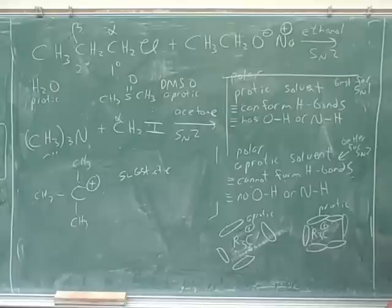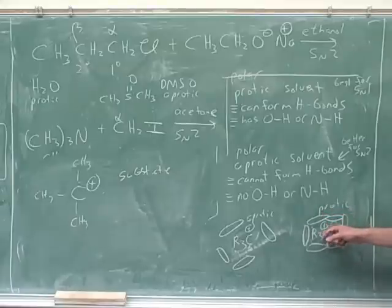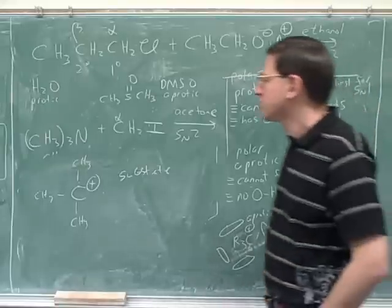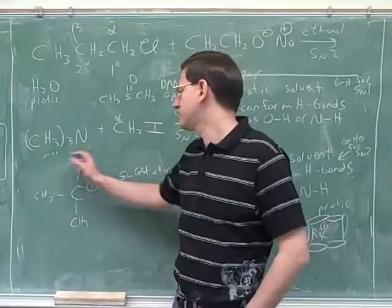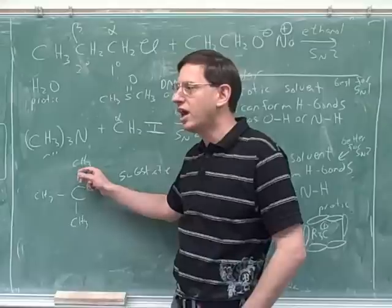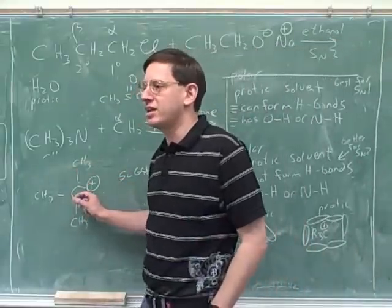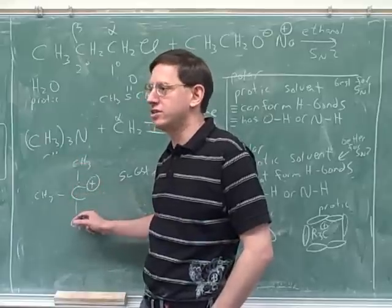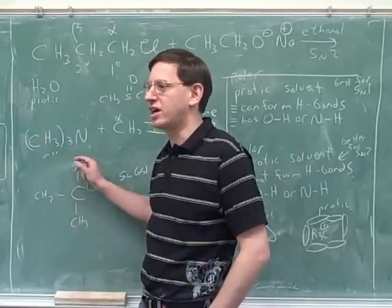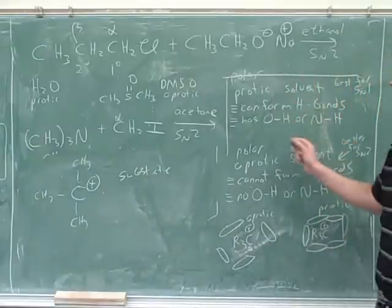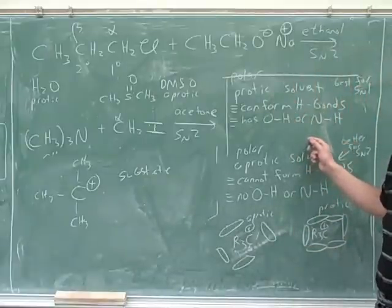If you memorize that the big obstacle to SN1 is stabilizing the carbocation, that explains almost all the patterns for SN1. It explains why tertiary is best — because there are the most electron-donating alkyl groups — and it explains why protic solvents are best. Carbon chains are electron-donating, which is why they stabilize the carbocation. It's important to see how solvents tie into the whole general pattern.